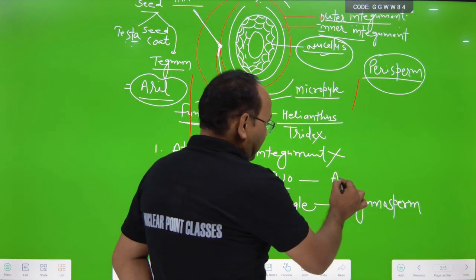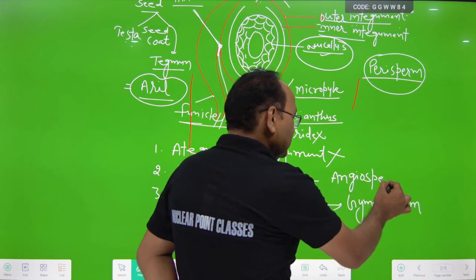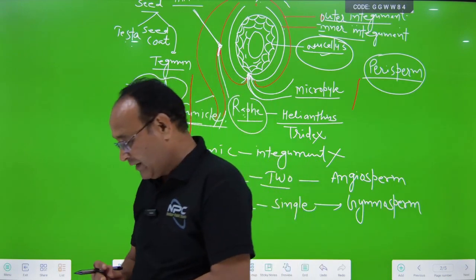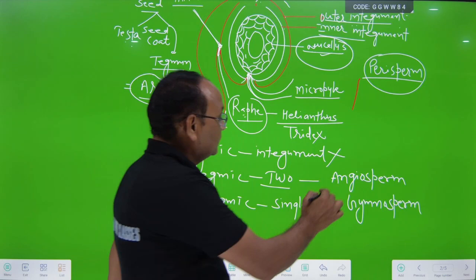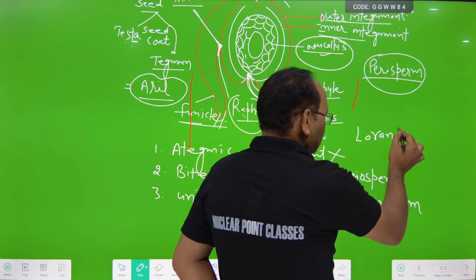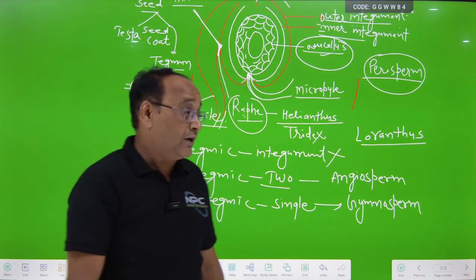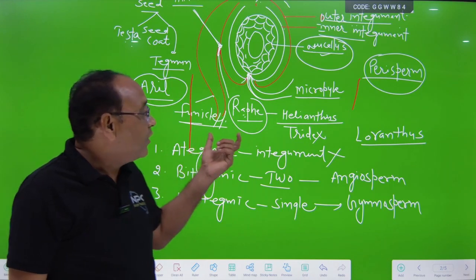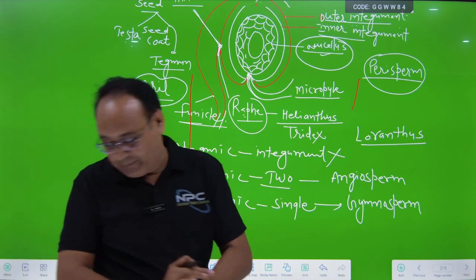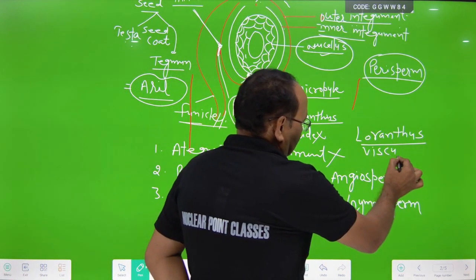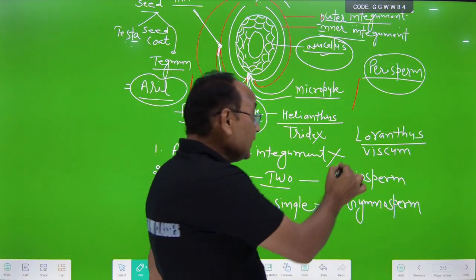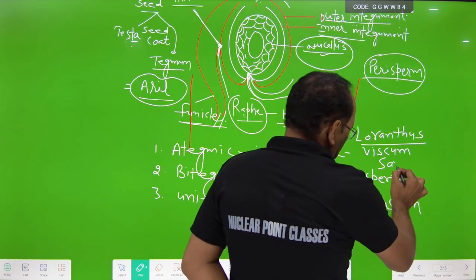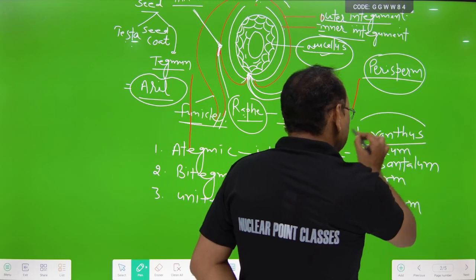Ategmic ovules are present in some parasitic plants. These parasitic plants include: first, Loranthus — it is a parasite plant and has ategmic ovules. Second example is Viscum, and another example of ategmic ovule is Cuscuta. All these plants are parasitic plants.